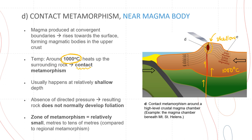Contact metamorphism usually happens at relatively shallow depth — it has an absence of directed pressure, so it is low pressure and high temperature at about 1000 degrees Celsius. This results in a rock that normally doesn't develop foliation. The zone of metamorphism is relatively small, just surrounding the magmatic body — meters to tens of meters — compared to regional metamorphism which extends over kilometers. An example is the magma chamber beneath Mount St. Helens.